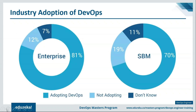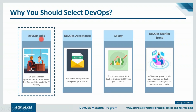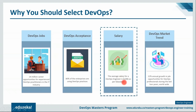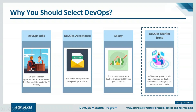Regarding the DevOps market trend: 81% of enterprises are using DevOps practices, and about 70% of small to medium businesses are using DevOps practices. There are 24 million career opportunities for experienced DevOps practitioners in the IT industry. The average salary for a DevOps engineer is $106,000 as per Glassdoor, and there has been 22% annual growth in job opportunities for DevOps professionals over the last two years worldwide.